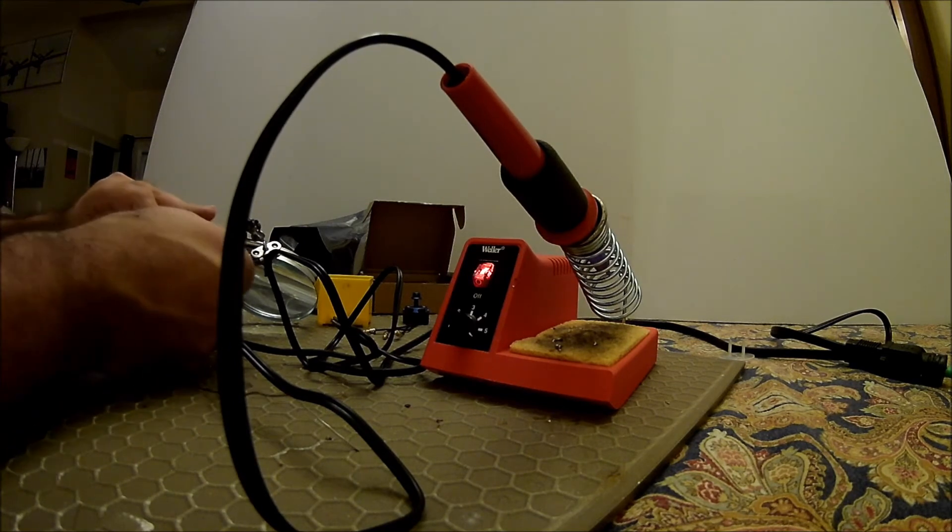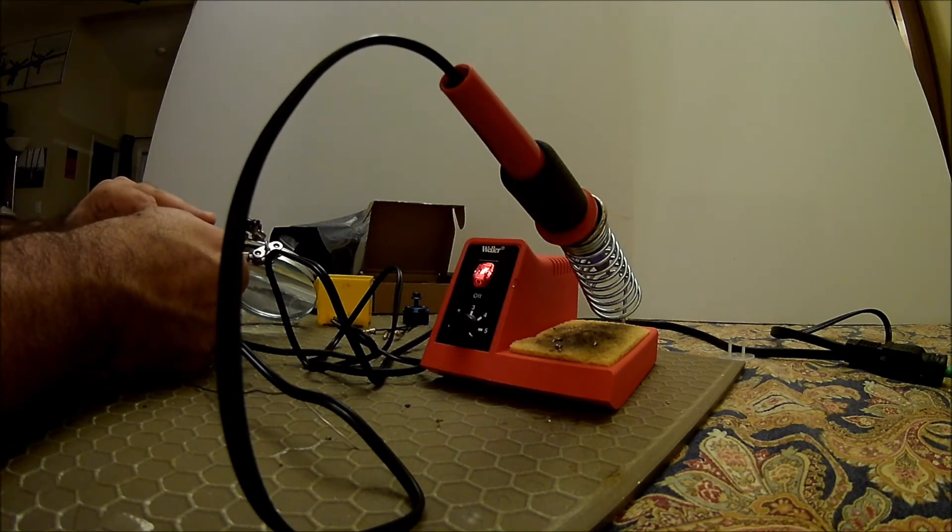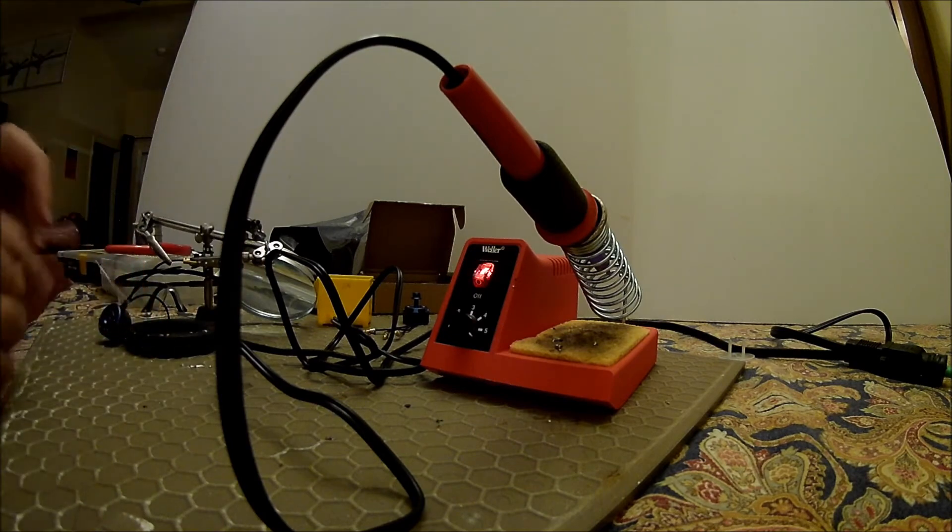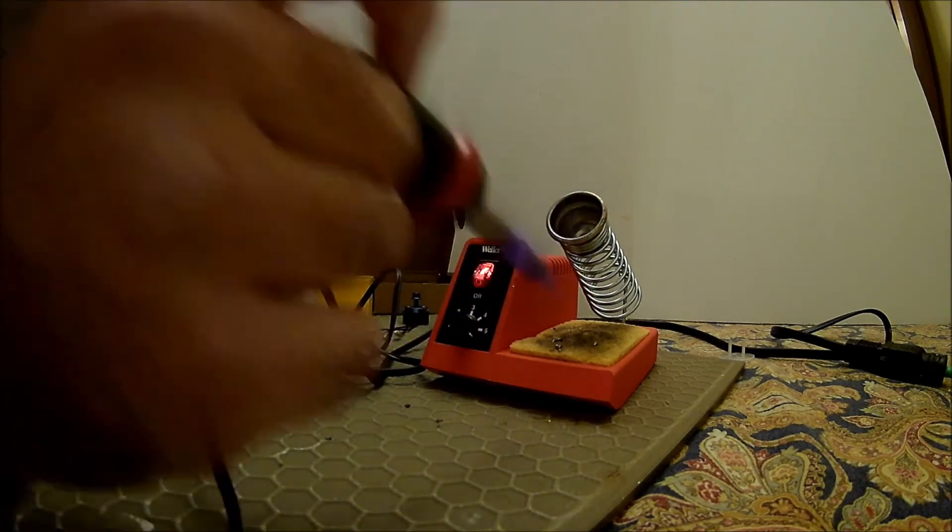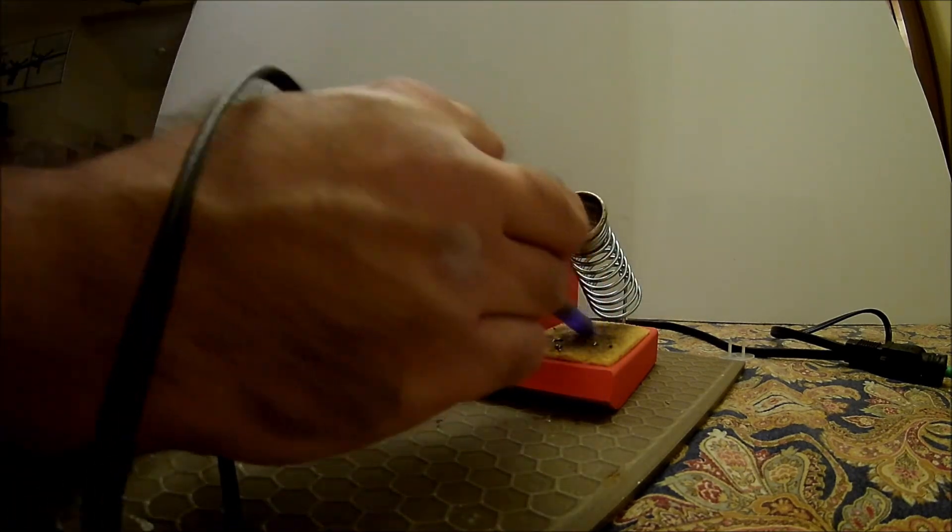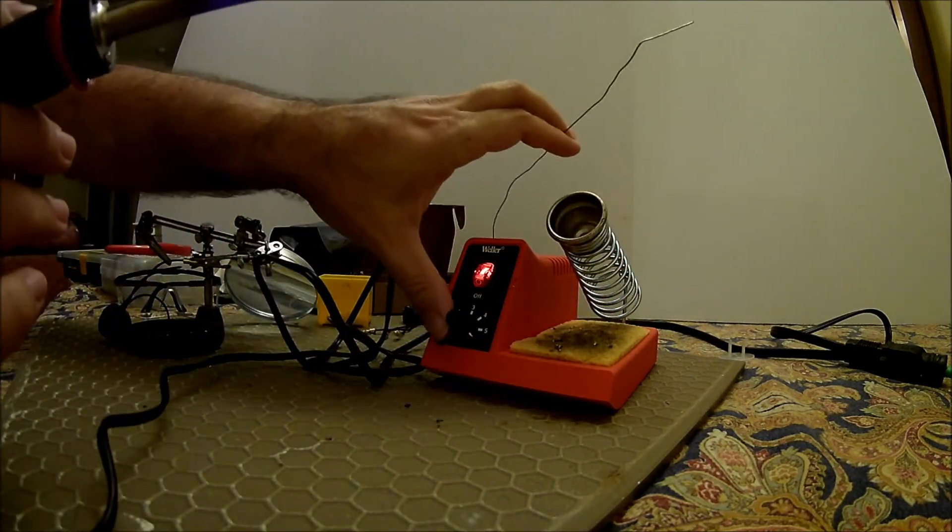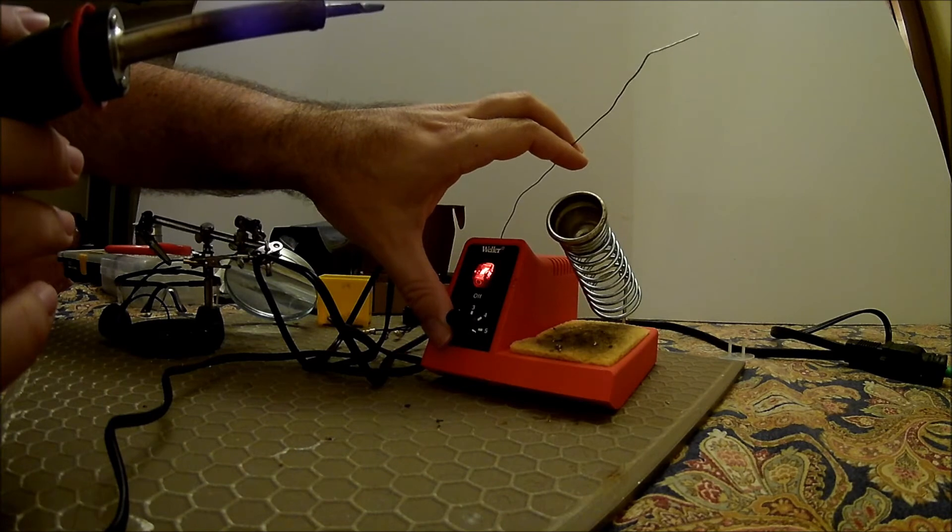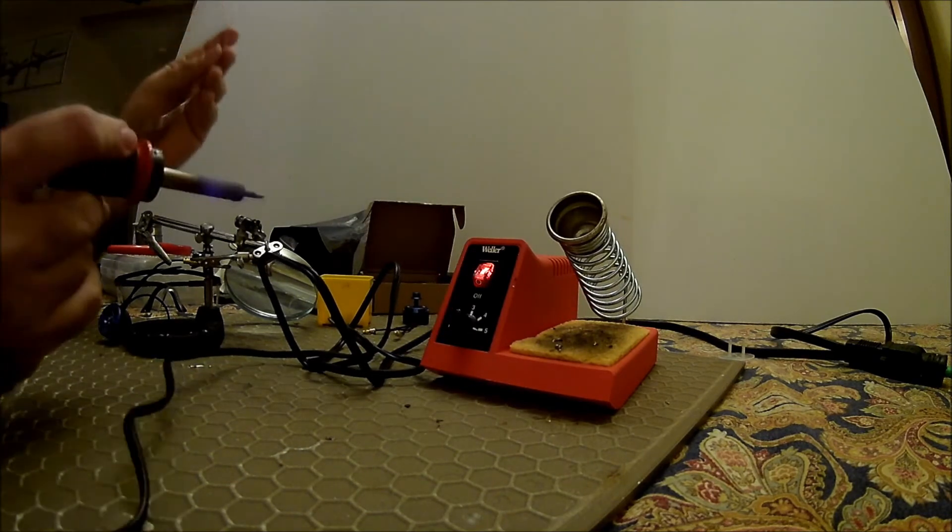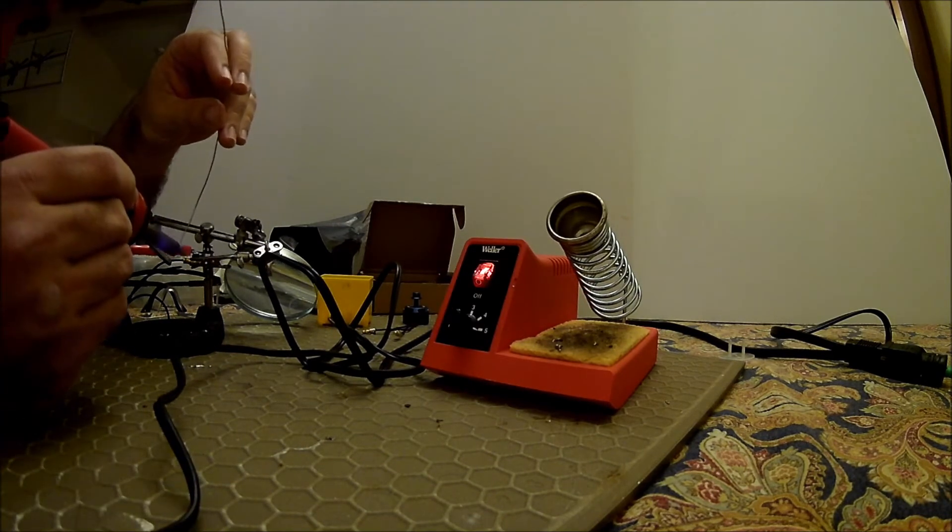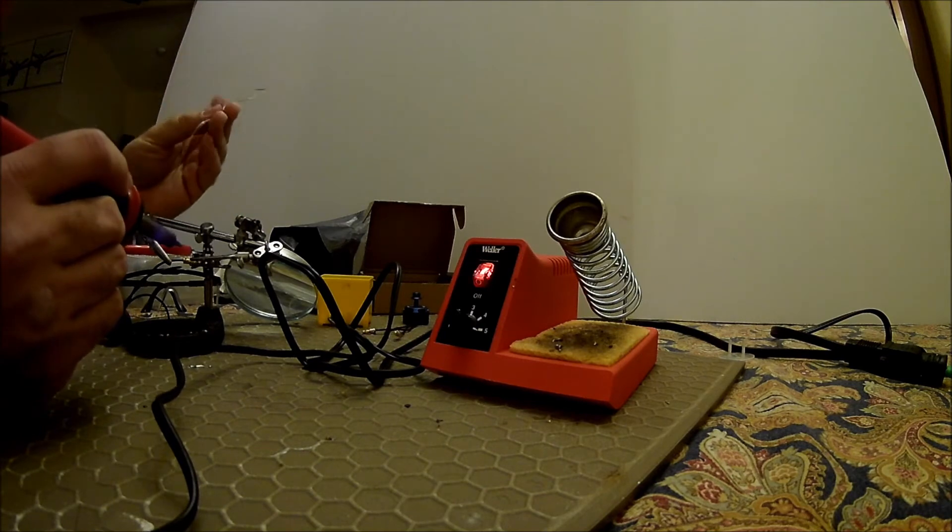But I have done direct soldering right on the PCB boards before. Slightly different technique with that. Got to be very careful with the heat when directly soldering onto a circuit board or it can melt stuff easy. That's where this power control comes in nice. You can vary the power that's going into the soldering iron before you actually melt something.